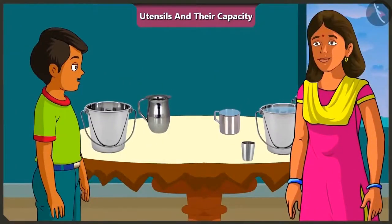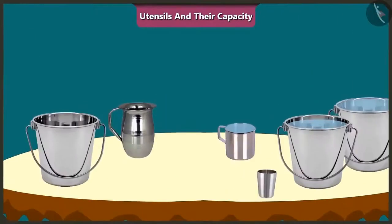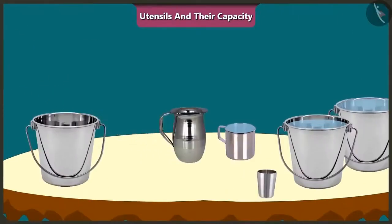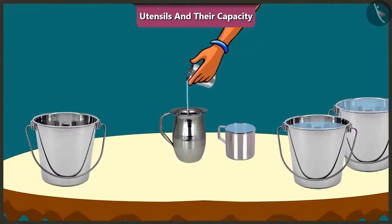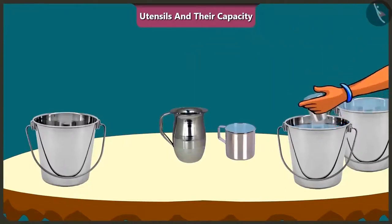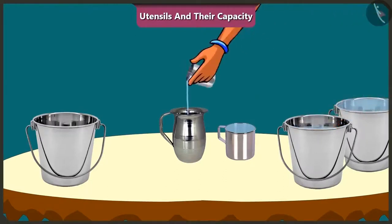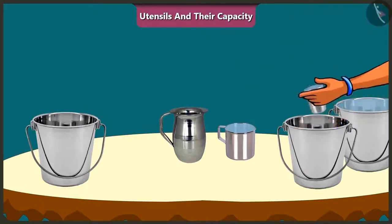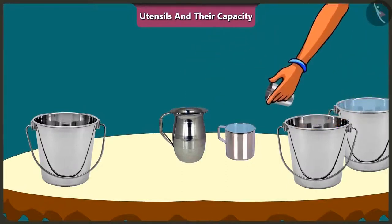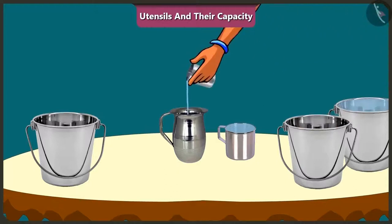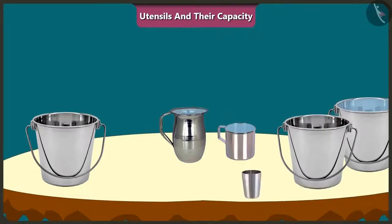Now, with the help of the same glass, we will fill this jug with water. One, two, three, four, five and six. The jug is completely filled. So the capacity of this jug is equal to six glasses of water.